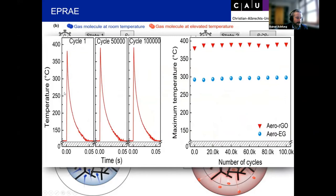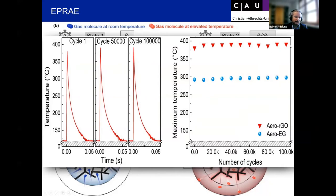This works for quite a while — here you see cycle one, here cycle 100,000, with almost no change. So this air explosion can be done in a continuous manner. Looking at the number of cycles versus maximum temperature, it even gets slightly better over time, perhaps because some material inside burns away and it gets slightly more lightweight, reaching higher temperature. This is demonstrated with reduced graphene oxide, but you can do it with all kinds of materials, even carbon nanotubes.